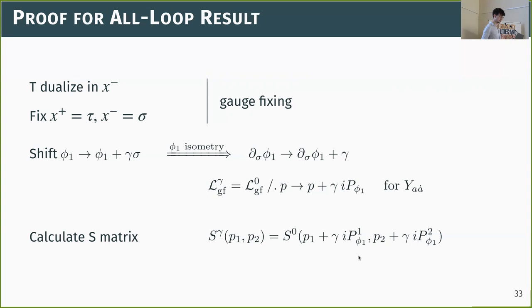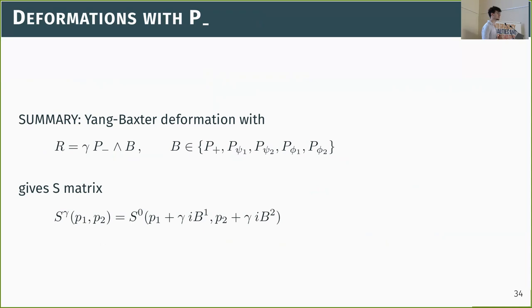So the deformation with P-minus is quite special. It does not give a Drinfeld twist, but rather an S-matrix that is the undeformed S-matrix with shifted momentum. The Drinfeld twist mostly survives quantization — in all cases except P-minus, which takes a different form.